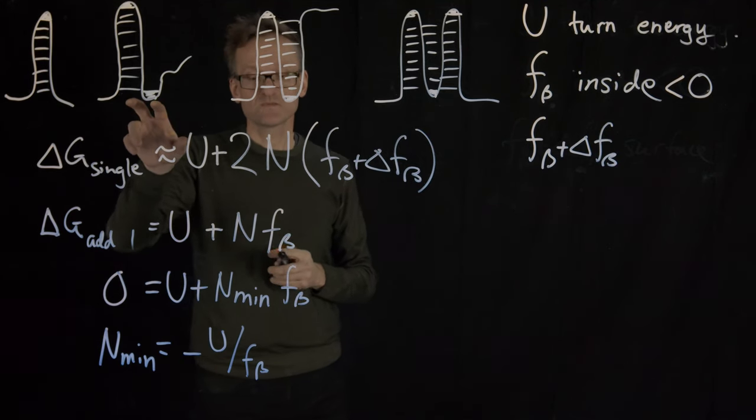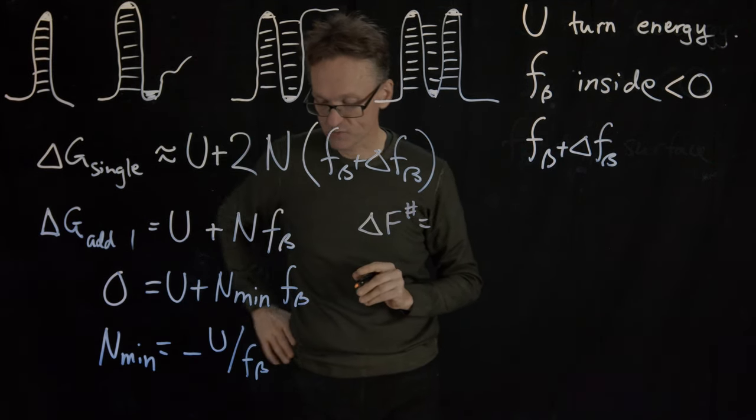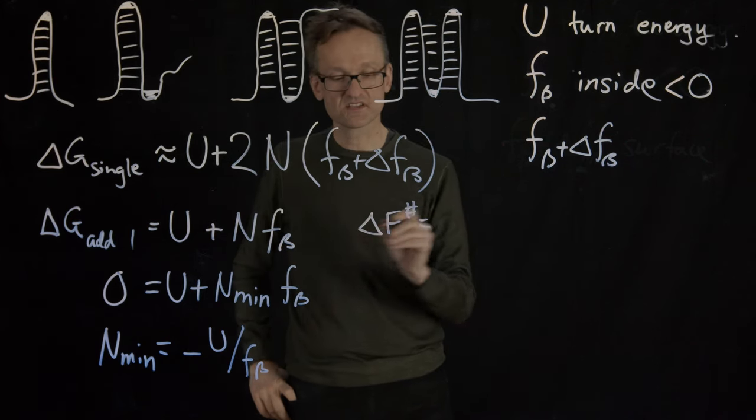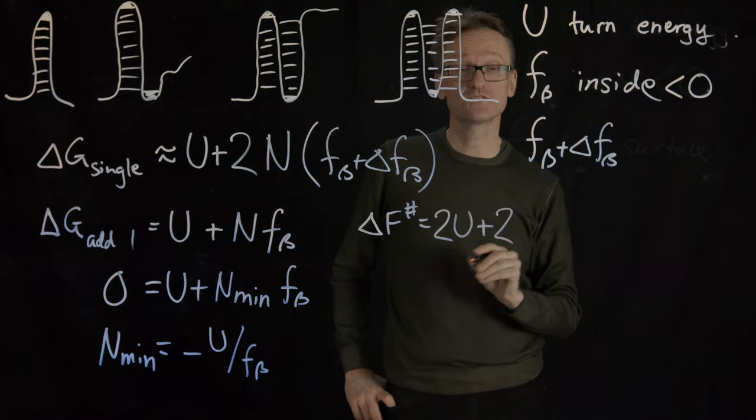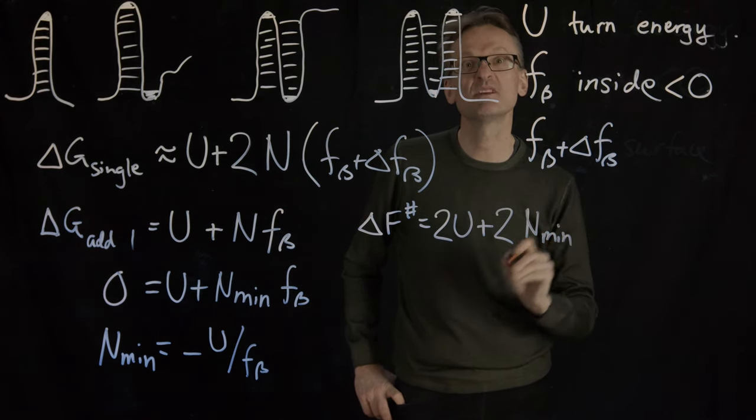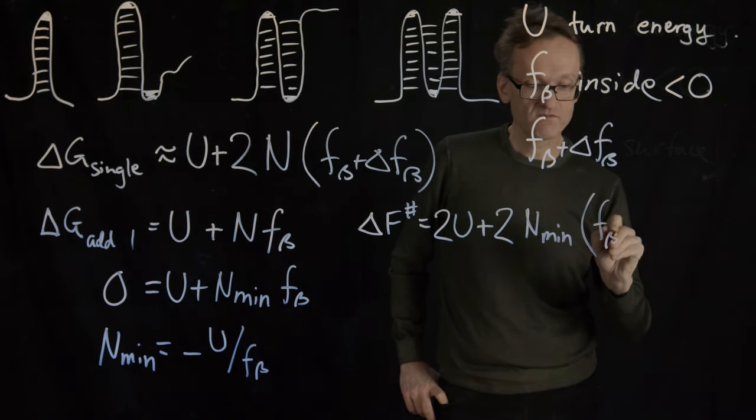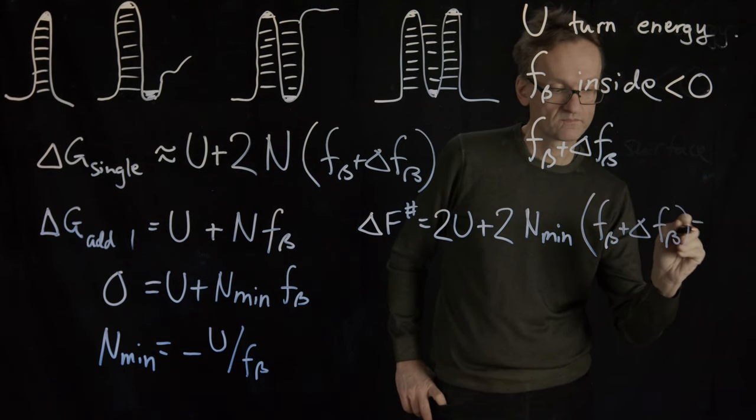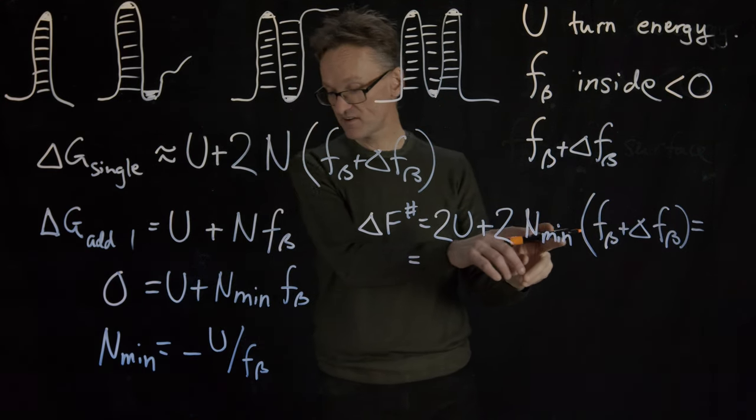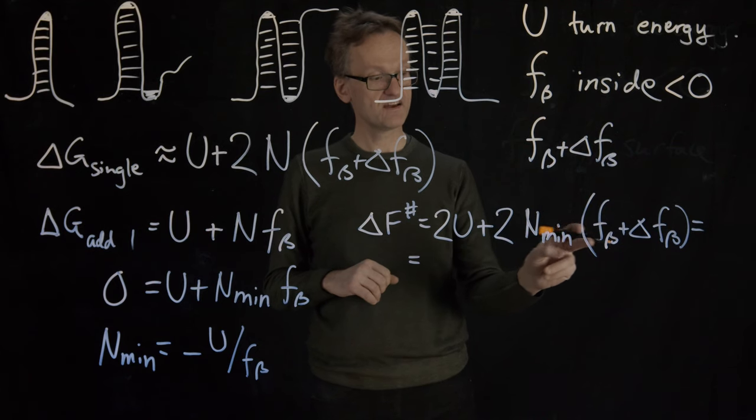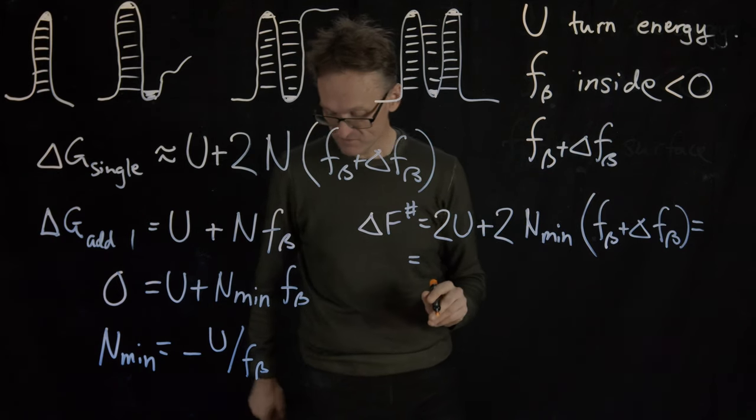But let's then look at the specific transition state. So ΔF‡ equals what? Well that's almost the same here but now I have two turns plus two times the number of residues, but that was N_min, this is why we needed it, and then multiply that by f_β plus Δf_β. Now I can take this expression for N_min, enter that here. N_min is U divided by f_β but you see the first term there it says f_β so that U is going to cancel that U. Pretty cool.